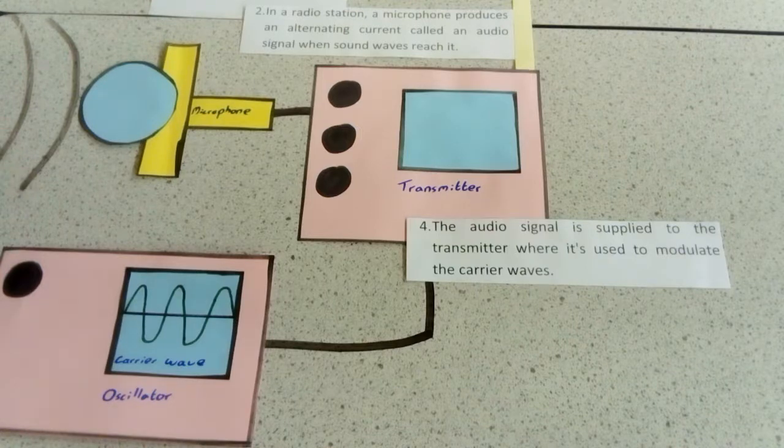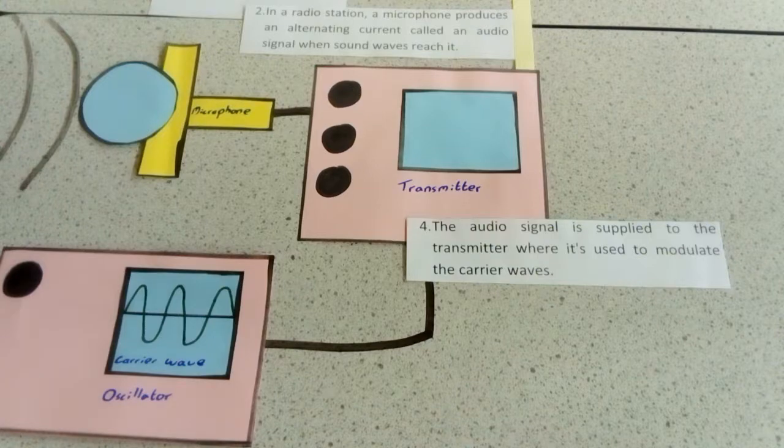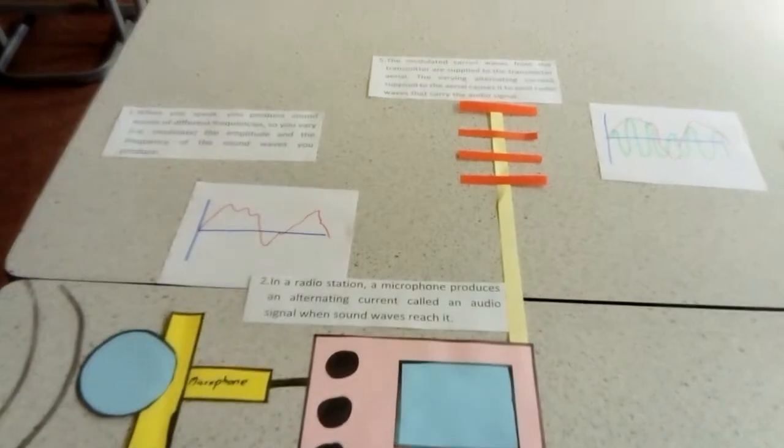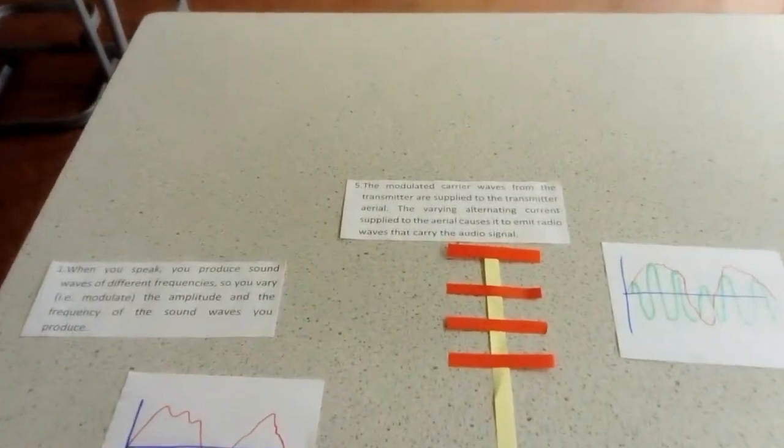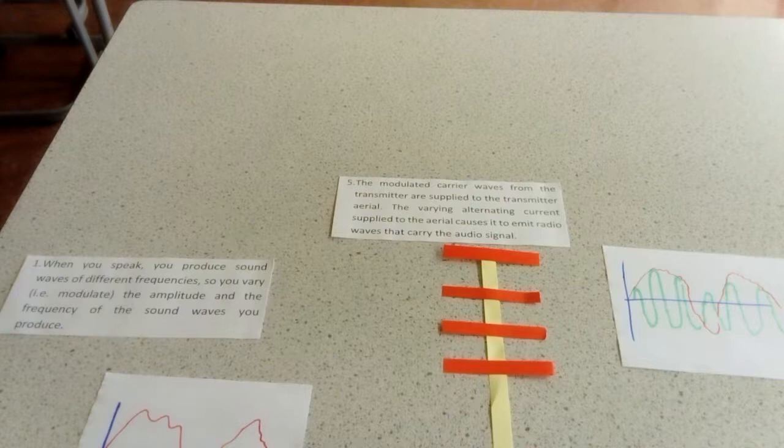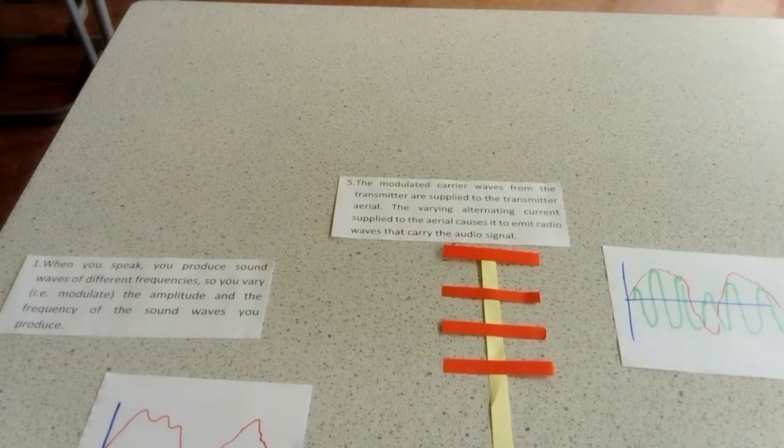The carrier wave now has a similar configuration or shape to that audio wave. This modulated carrier wave is then sent up the aerial where it's converted into a radio wave.